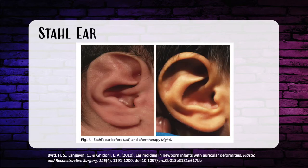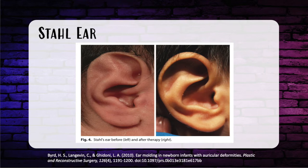Next is Stahl's ear. The most prominent feature is an abnormal third crus of the antihelix, along with flattening of the helix and posterior superior projection of the helical rim. Treatment includes wedge excision, and there's usually enough local cartilage for a graft to create a normal ear. You may hear it referred to as the 'elf ear' or 'Spock ear.'